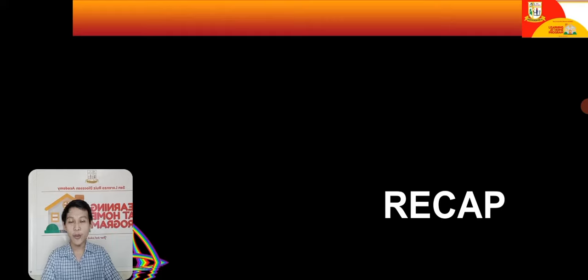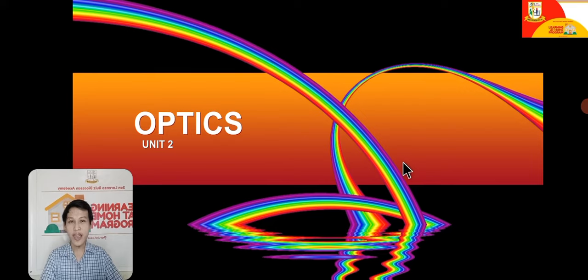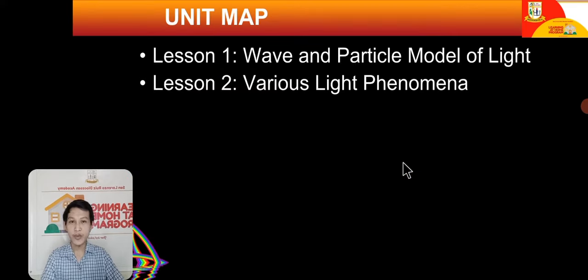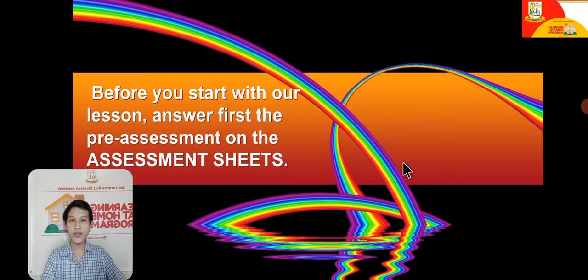You learned to compare how Galileo and Aristotle had their own views about motion. Now we are going to discuss another part of physics — optics. For this unit, you will learn two lessons: lesson one is about the wave and particle model of light, and lesson two is about various light phenomena.